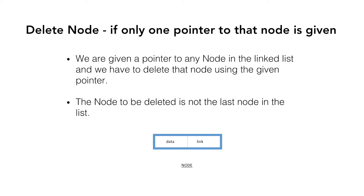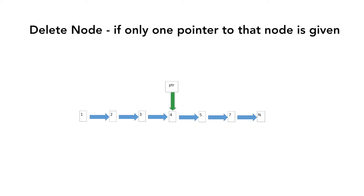Taking this as the basic structure of our node, let's see how we can do it. Suppose this is the linked list given to us with one pointer ptr pointing to the node containing value 4, and we are required to delete this node.